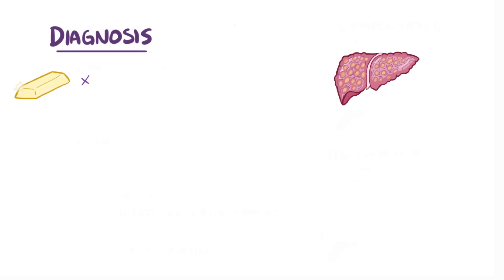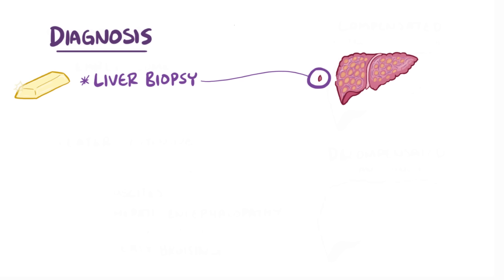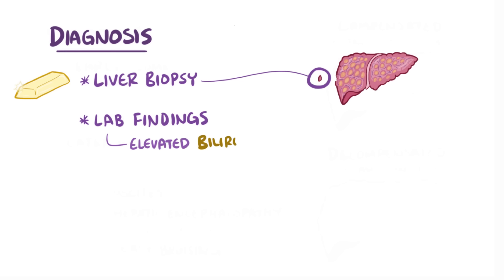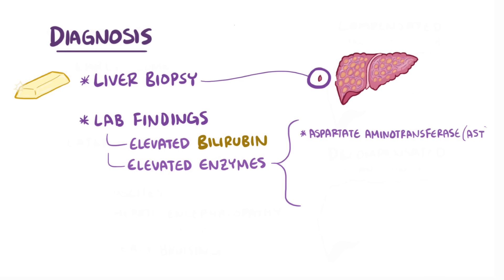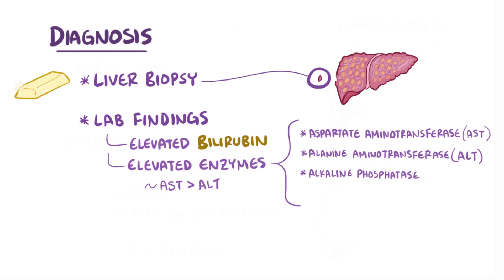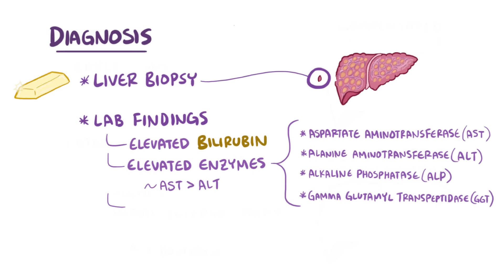For a diagnosis, the gold standard is a liver biopsy — taking a tiny sample of the liver tissue and examining it under a microscope. Common lab findings include elevated serum bilirubin, as well as elevated liver enzymes like aspartate aminotransferase (AST) and alanine aminotransferase (ALT), where AST is usually more elevated than ALT. Alkaline phosphatase (ALP) and gamma-glutamyl transpeptidase (GGT) can also be elevated, and there might also be thrombocytopenia, or low platelet count.